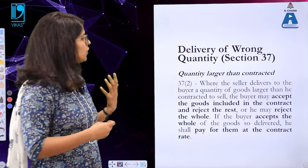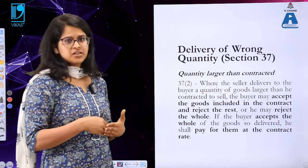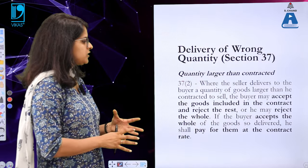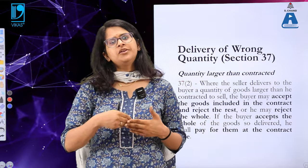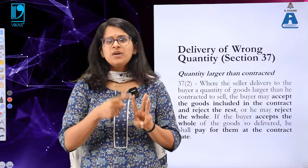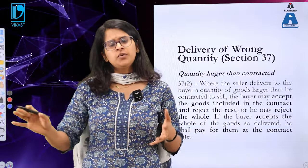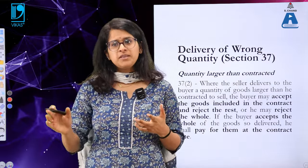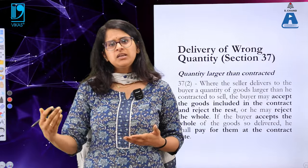Subsection 2 states: where the seller delivers a quantity larger than contracted, the buyer may accept the goods included in the contract and reject the rest, or may reject the whole. If the buyer accepts the whole of the goods delivered, he shall pay for them at the contract rate. Using the same example — if you contracted for 100 pens but received 120, you can accept 100 and return 20, reject all 120, or accept all 120 and pay at rupees 20 per pen — so 20 multiplied by 120.